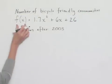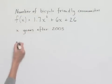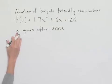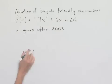We're going to substitute 826 for f(x), the value that was given to us, in order to solve for x, which would be the number of years after 2003.